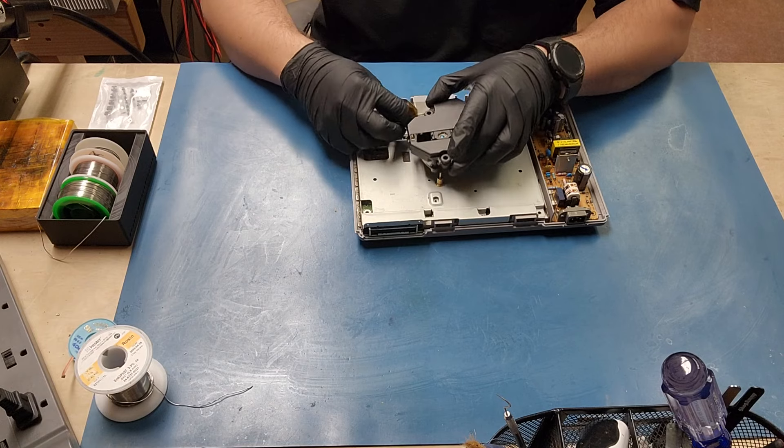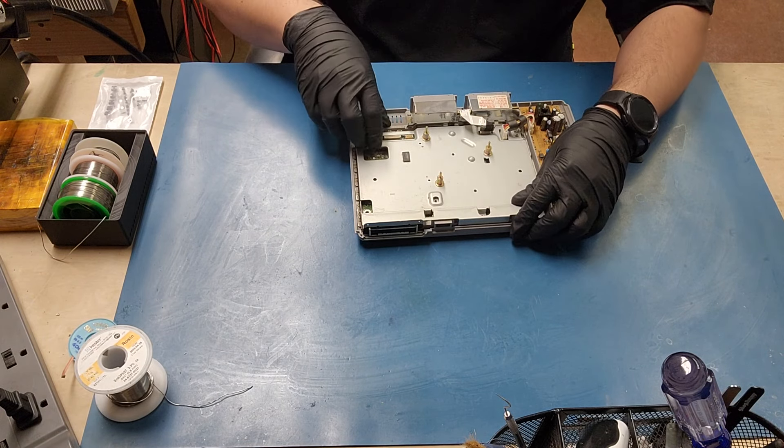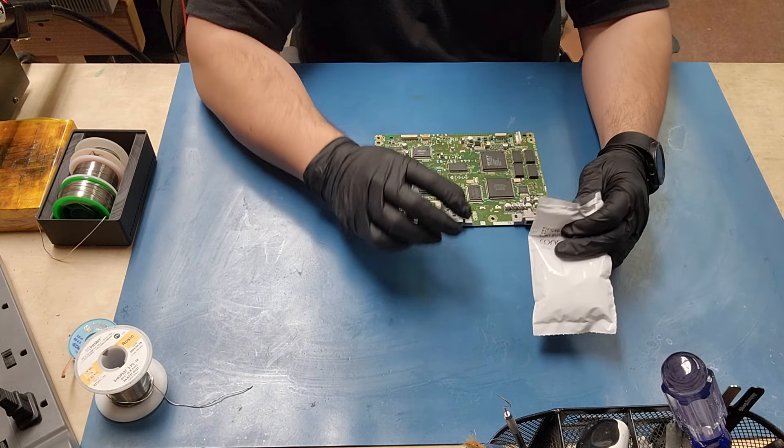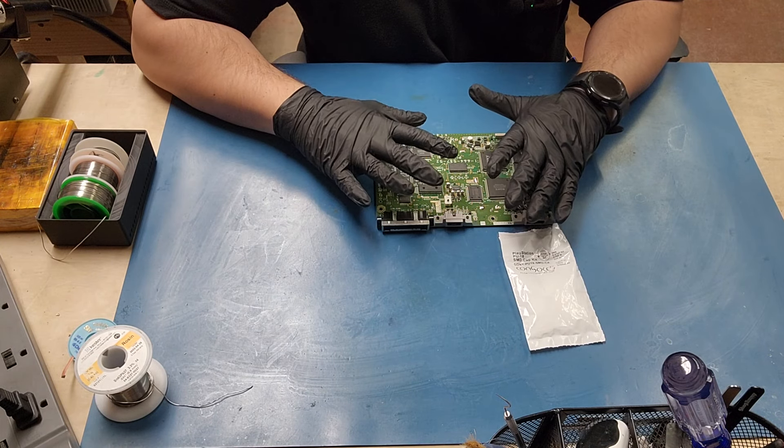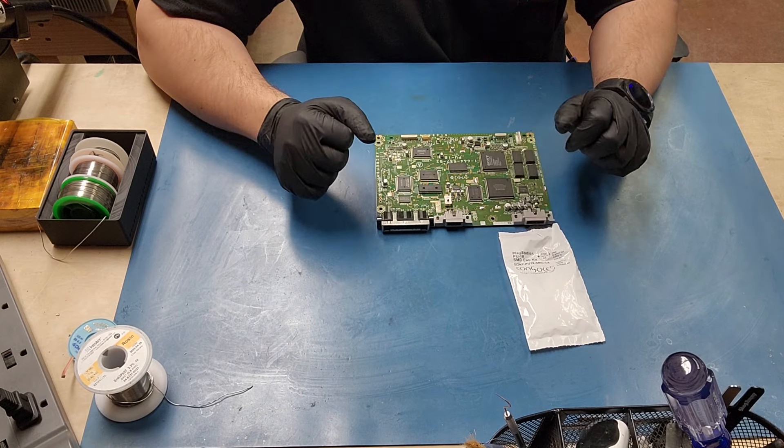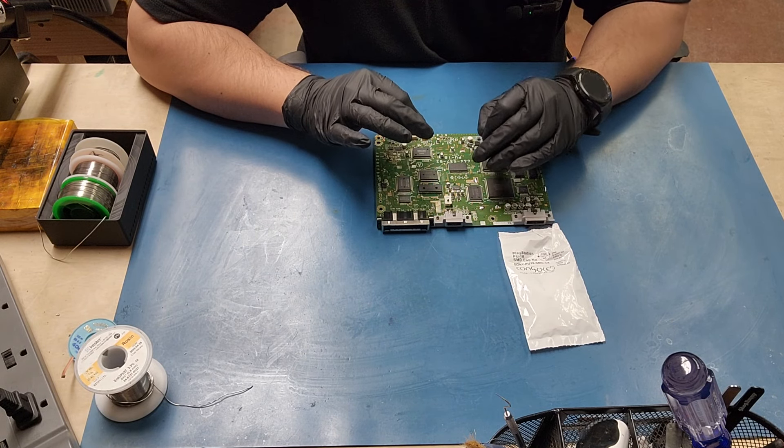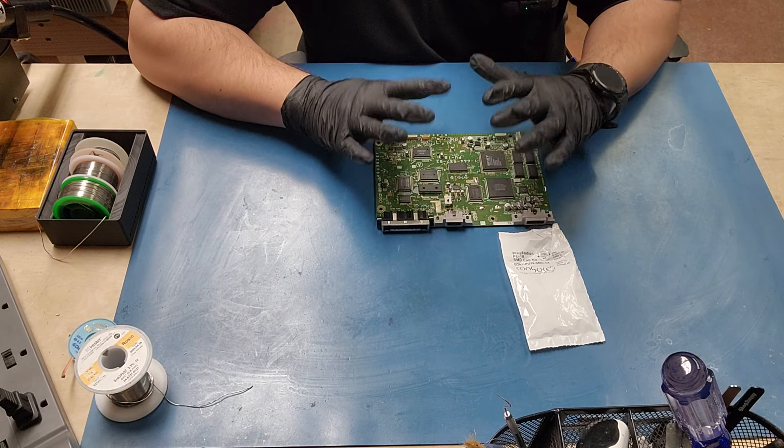I have conveniently taken apart this PlayStation 1. And of course, we already have our capacitor kit from Console 5 for this PlayStation, which is a PU-18. We're not going to perform a complete recapping of this console. We're just going to use our tools and try out the different methods of removal and installation of new capacitors on this board.